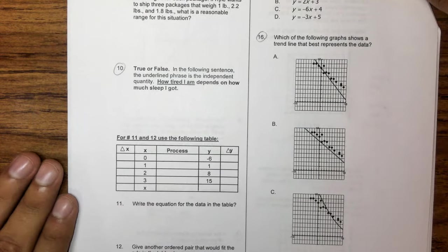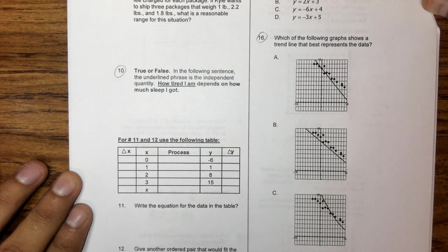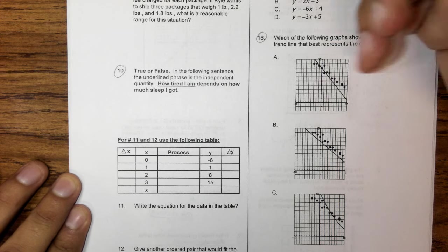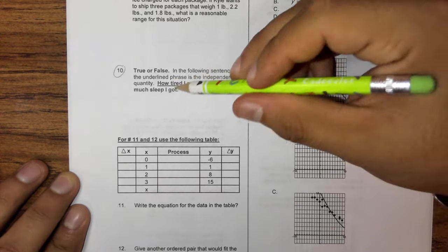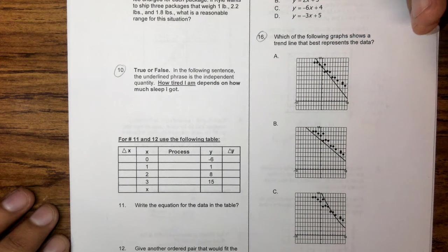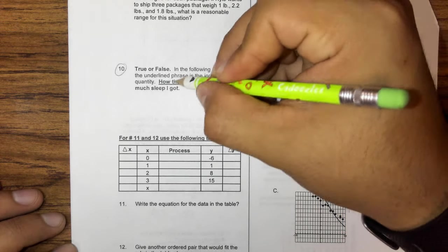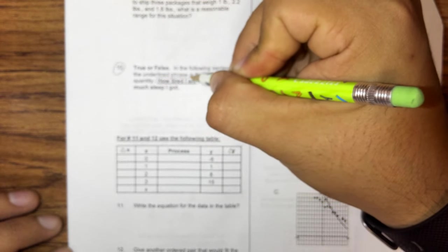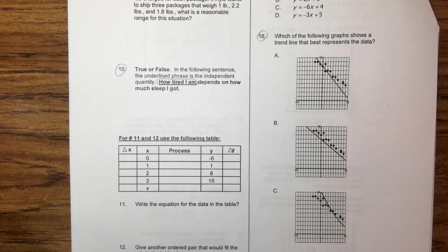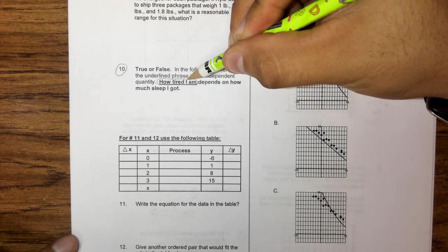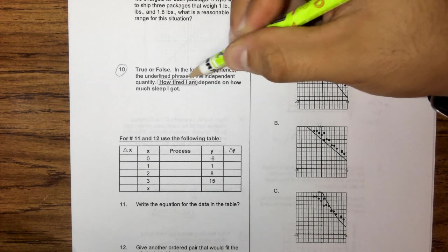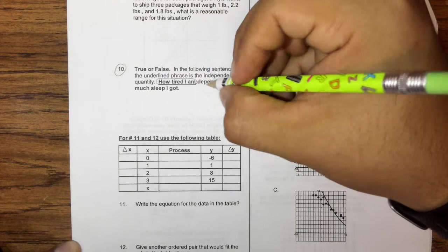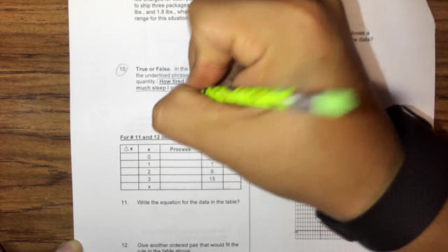Alright, number 10. True or false? In the following sentence, the underlying phrase is the independent quality or quantity. Alright, so it says how tired I am depends on how much sleep I got. So again, this is a true or false? It's basically figuring out, okay, does how tired you are, does that depend on how much sleep you got? And it does. So since the amount of tiredness, my fatigue, depends on how much sleep I got, then this would be my dependent.